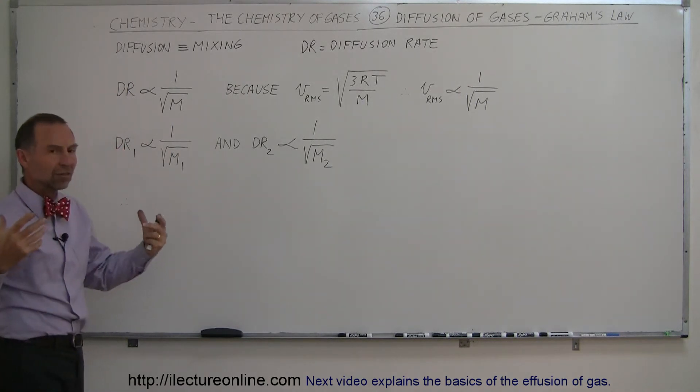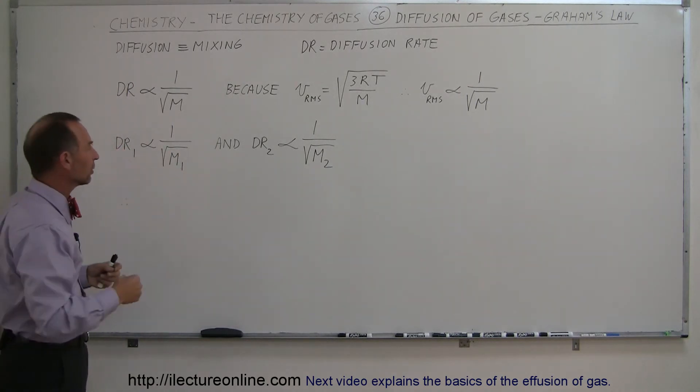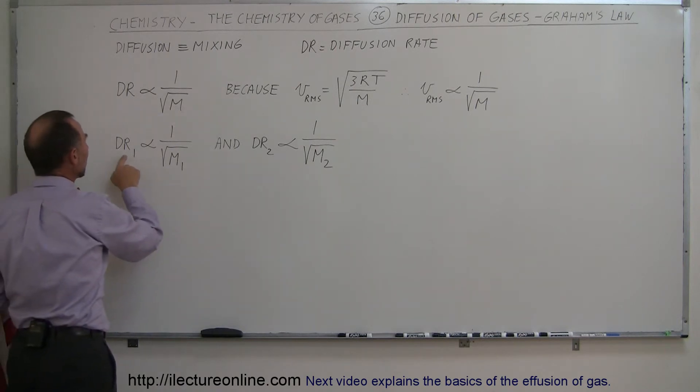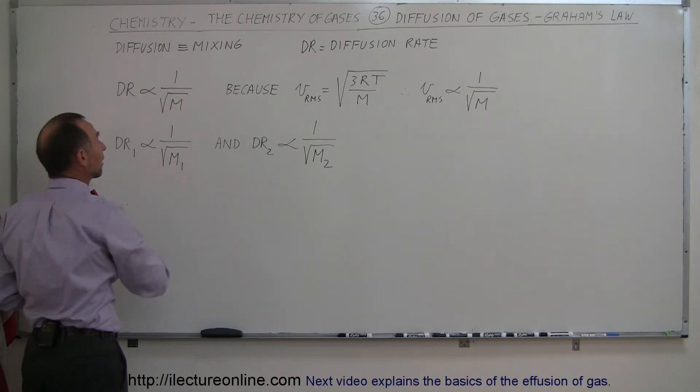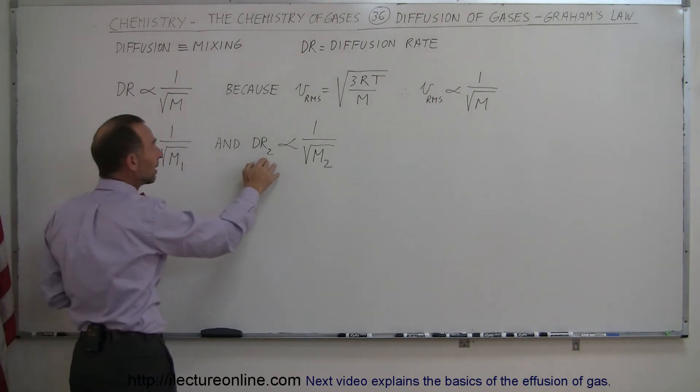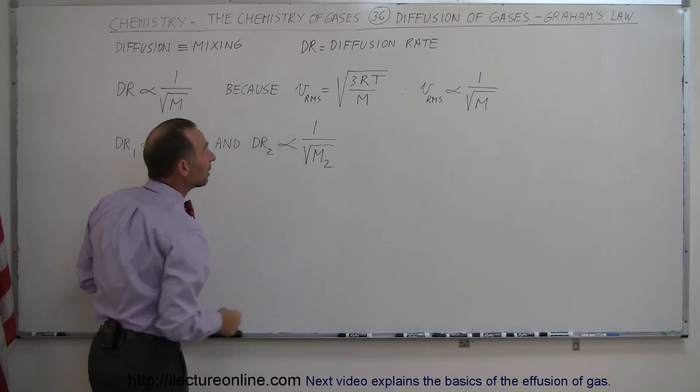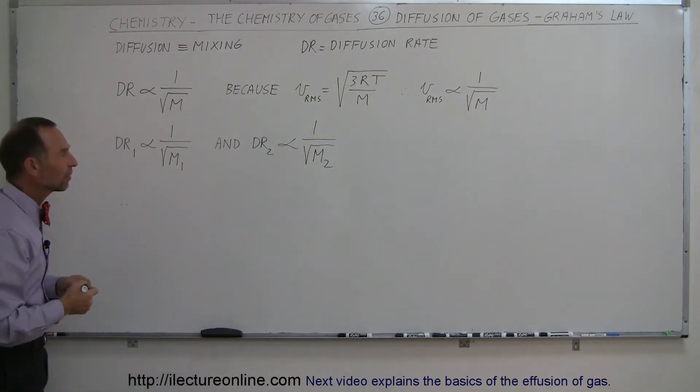So therefore, if we have two gases that are diffusing one into the other, we can then say that the diffusion rate of one gas is proportional to one over the square root of the molar mass of that gas, and the diffusion rate of the second gas is proportional to one over the square root of the molar mass of the second gas.